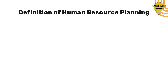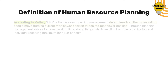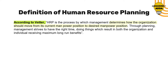After understanding what human resource planning is, let's look at definitions given by authors. According to Bether, human resource planning is the process by which management determines how the organization should move from its current manpower position to its desired manpower position. Through planning, management strives to have the right number of people doing the right things at the right time, resulting in both the organization and individuals receiving maximum long-run benefits.